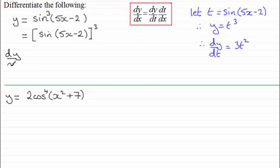we're going to have that this equals dy/dt. We know it's 3t squared, so it's going to be 3 times t, which was sin(5x-2), and that is all squared. I'll just put that in its own square brackets there, and that is squared.